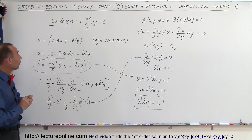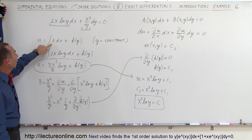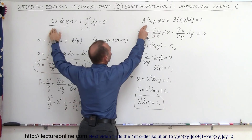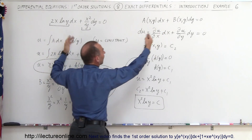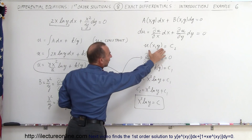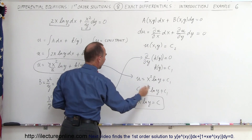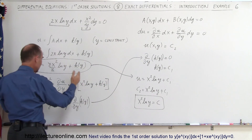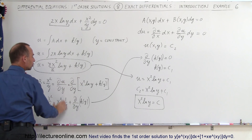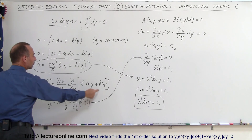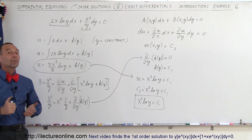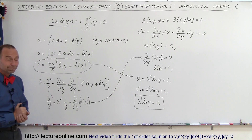To summarize the method: we take the integral of one of the two components, either A or B, to get u plus k of y. Then we use the fact that u equals a constant, and by setting B equal to the partial derivative of u with respect to y, we solve for the unknown function k of y. That's how we find the general solution.